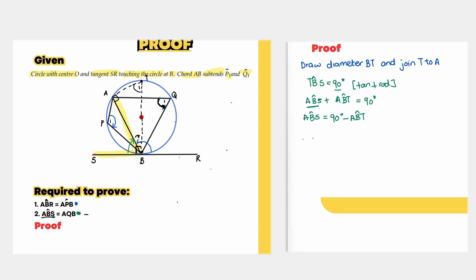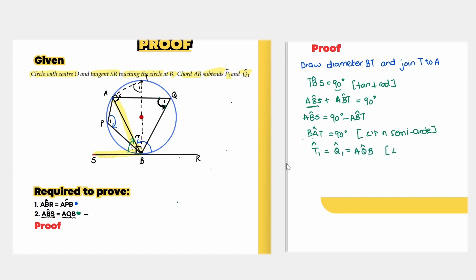We need to link this back. We see that angle BAT equals 90 degrees — reason: angles in a semicircle. We also know that angle T1 equals angle Q1, which is also known as angle AQB. The reason is angles in the same segment.